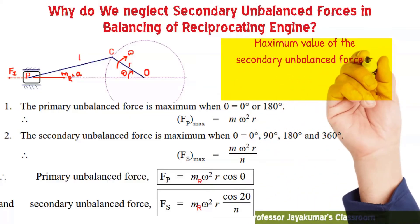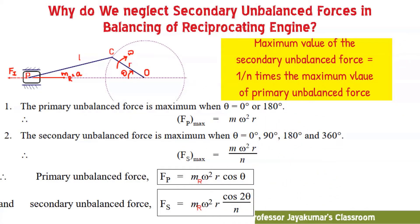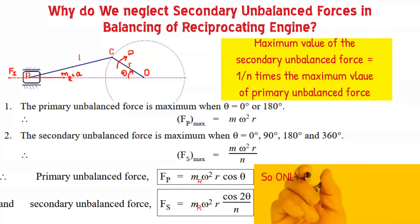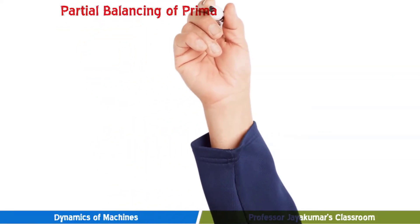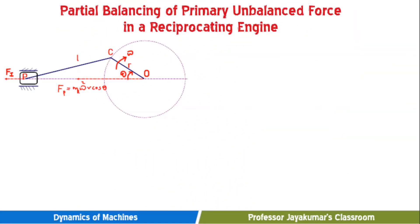It may be noted that the maximum value of the secondary unbalanced force is (1/n) times the maximum value of the primary unbalanced force, meaning the secondary unbalanced force value will be lesser and hence can be neglected. That is the reason why we consider only the primary unbalanced force in balancing of reciprocating masses. So our only problem is the primary unbalanced force: mr·ω²r·cos θ.